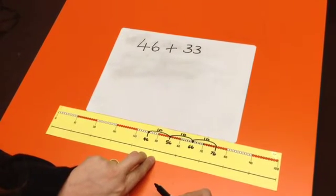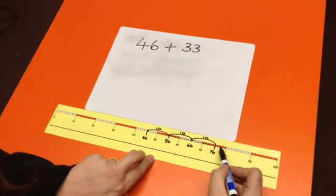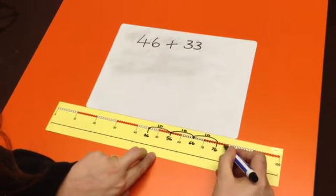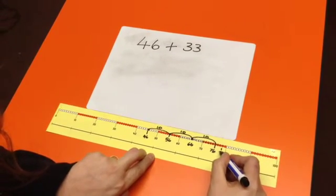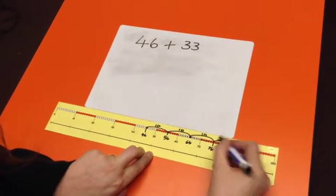One, two, three. Which therefore gives us the number 79, and we've jumped three places.